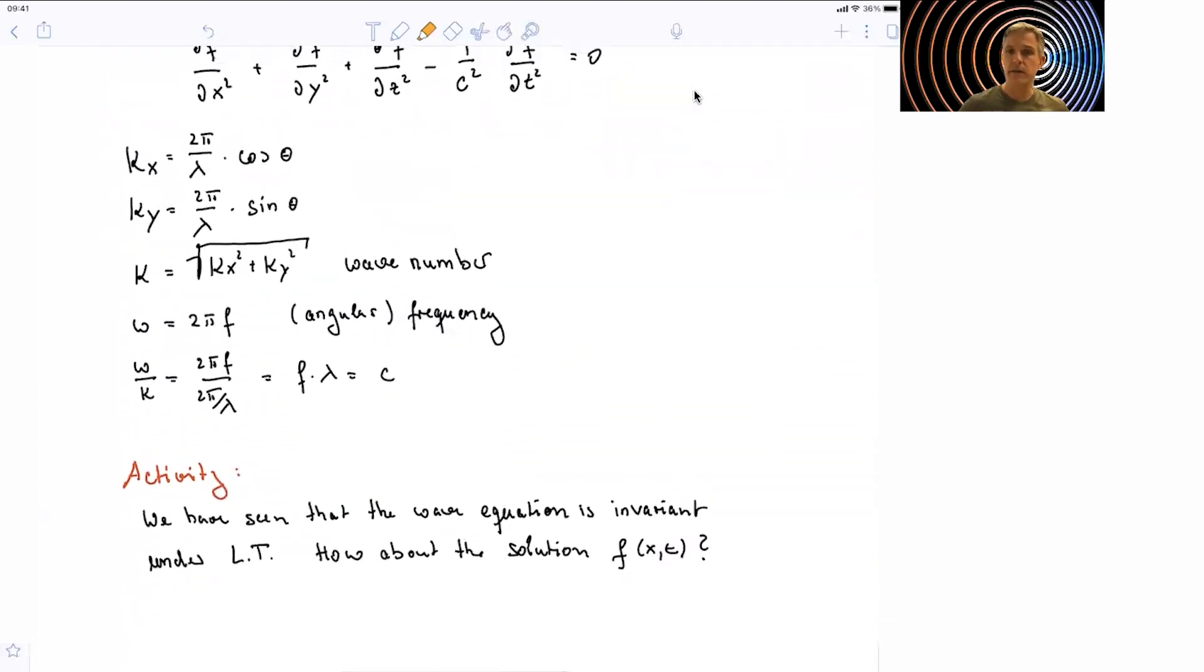So as a first activity, I will ask you to see how does this solution, how does this specific wave transform under Lorentz transformation? As a reminder, we have seen that the equation which governs how this light propagates is invariant under Lorentz transformation. But now we want to investigate what happens to the wave itself.